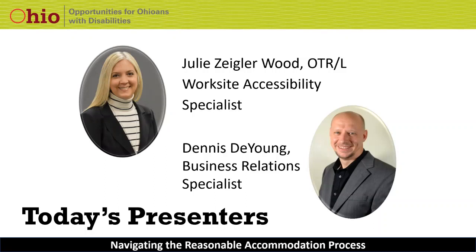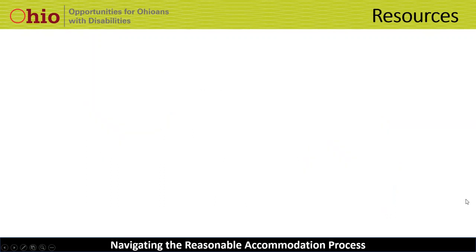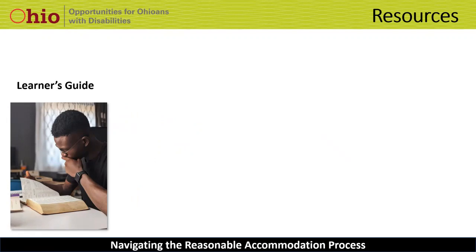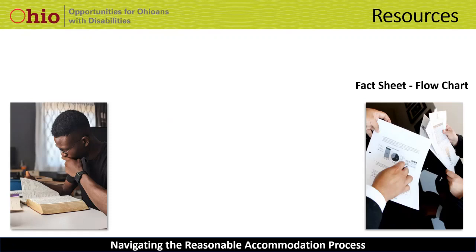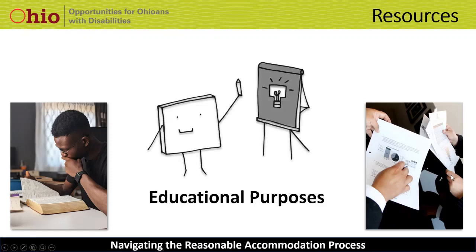In addition to our discussion today, we do have some resources available for you that Dennis is going to tell you more about. Along with the PowerPoint slides, you have a learner's guide, which includes more information than what we will cover today and the resources we used to create the training. We have also created a fact sheet and a flowchart to highlight the steps in the reasonable accommodation process. You can access these through the Employers page of the OOD website at www.ood.ohio.gov, and you can also find the link directly in the Q&A section here in Microsoft Teams. The information shared in these resources and during today's presentation is only for educational purposes and is not legal advice.